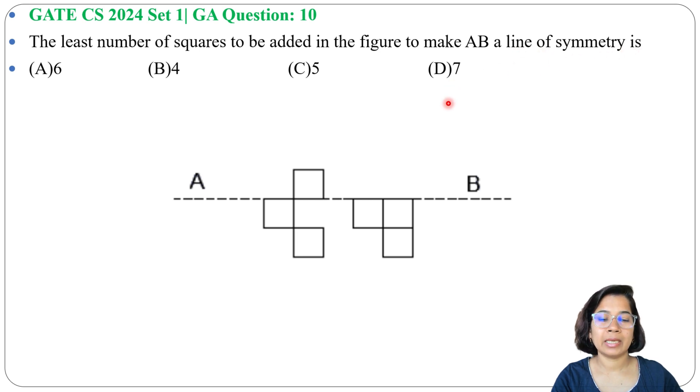A line of symmetry will divide into half, meaning this AB line will divide this structure into half. So a line of symmetry is a line that cuts a shape exactly in half.